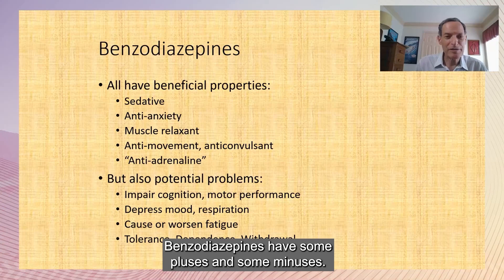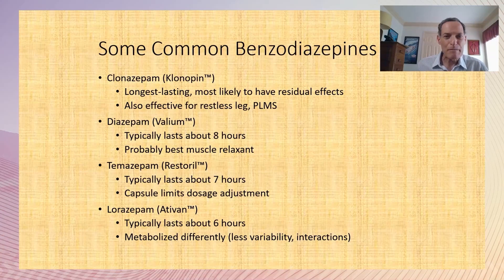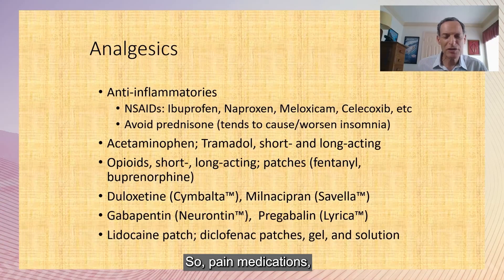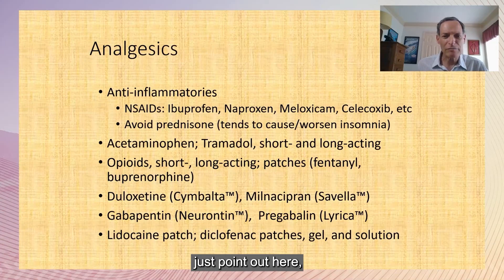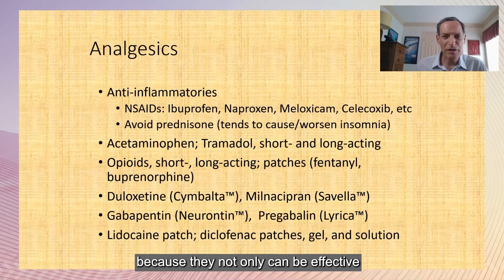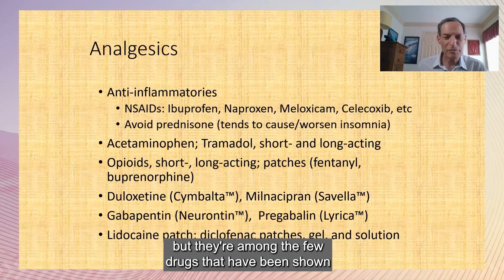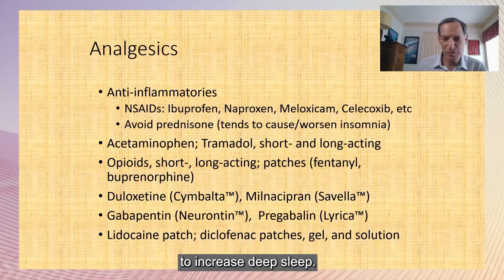Benzodiazepines have some pluses and minuses. Regarding pain medications, gabapentin and pregabalin are notable because they can be effective for various types of pain, especially neuropathic pain, and they're among the few drugs shown to increase deep sleep.